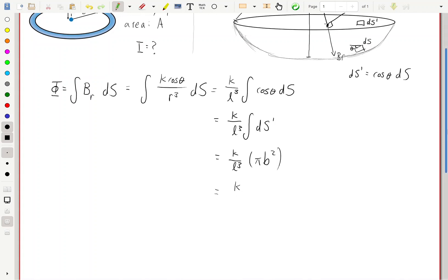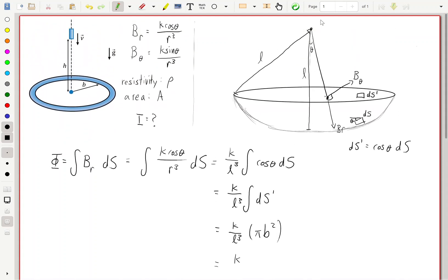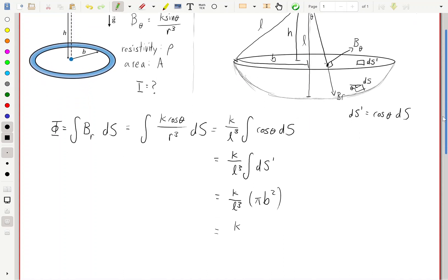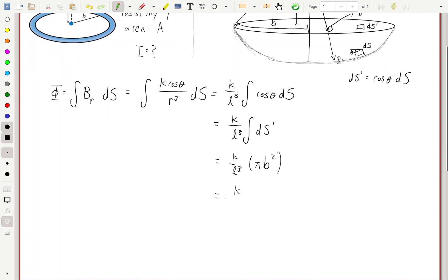But in the problem, we're not given what l is. So we can calculate it using Pythagorean's theorem. We know that distance is going to be b, and the height is going to be h. So l is going to be equal to the square root of b squared plus h squared. So we can rewrite this as k pi b squared over b squared plus h squared to the power of 3 over 2.